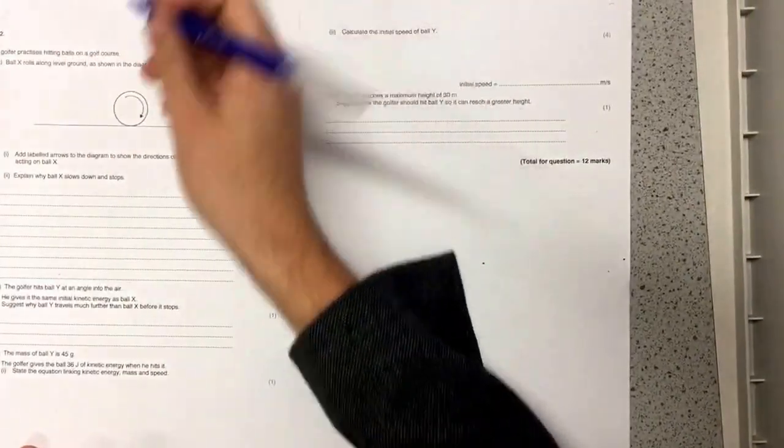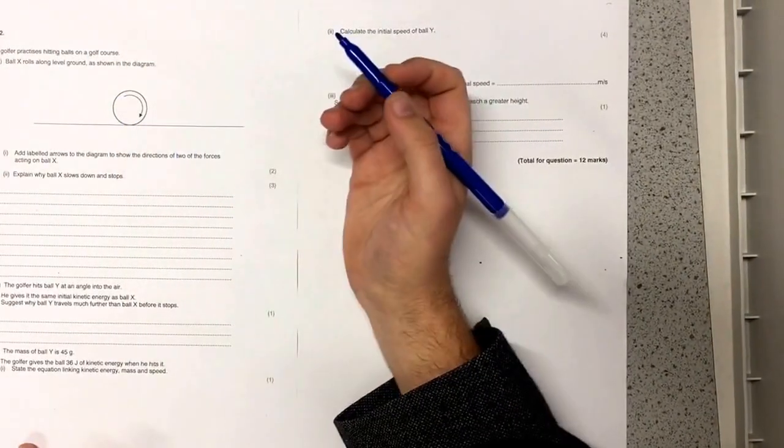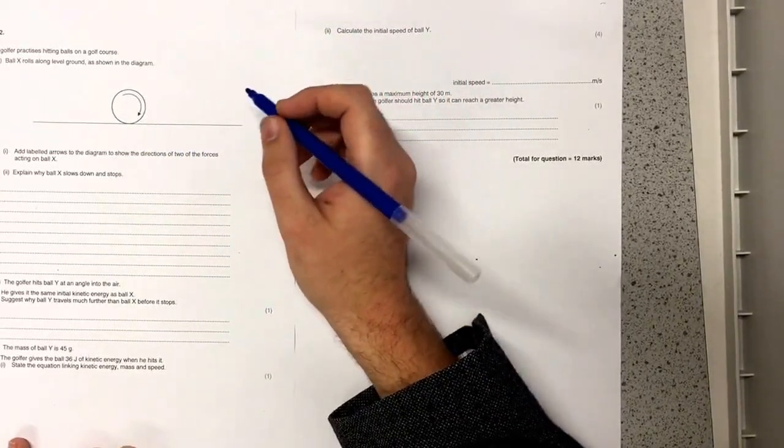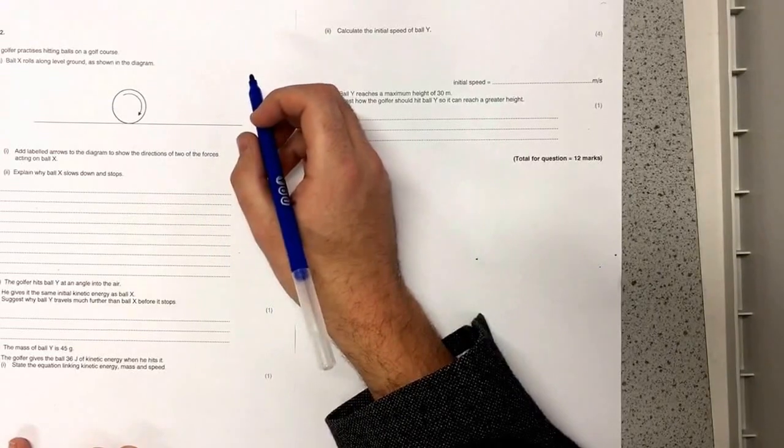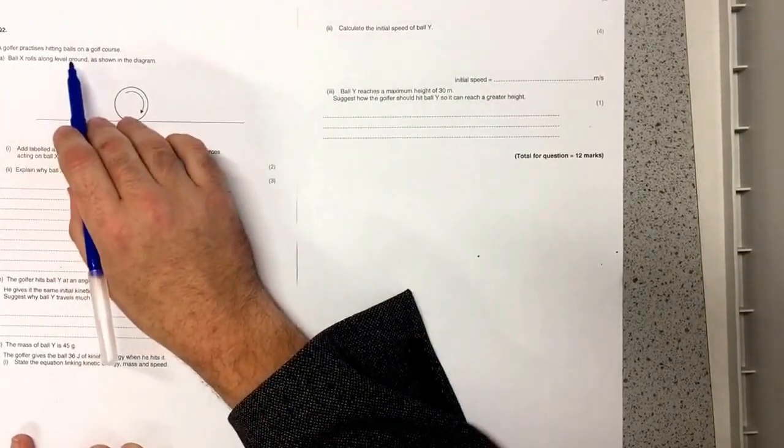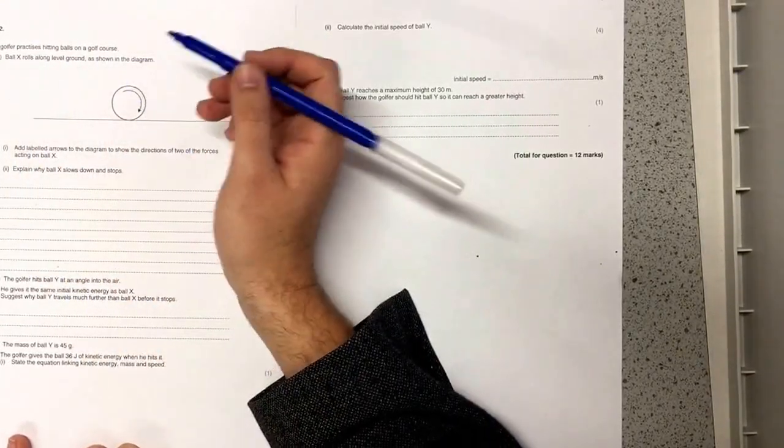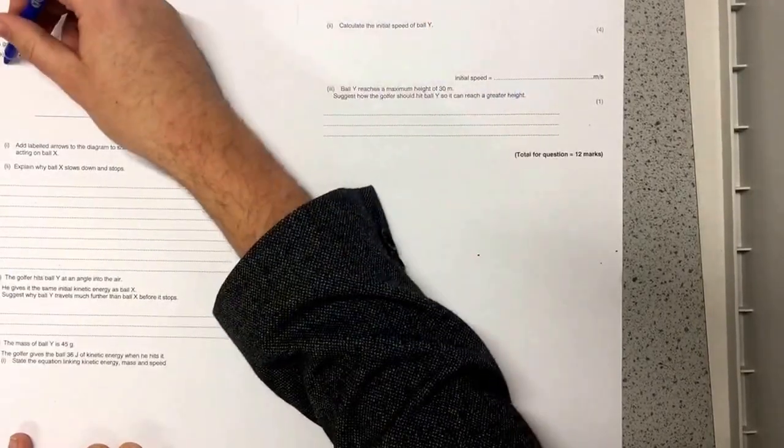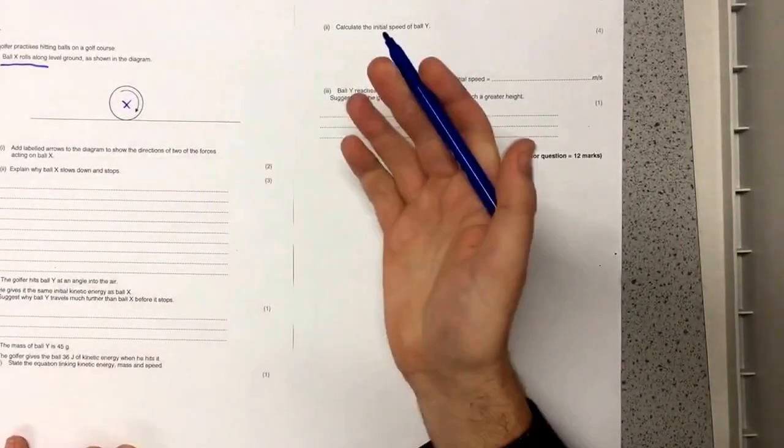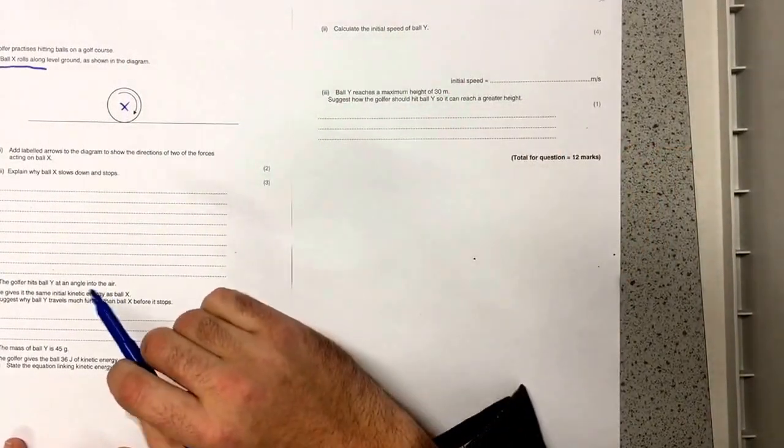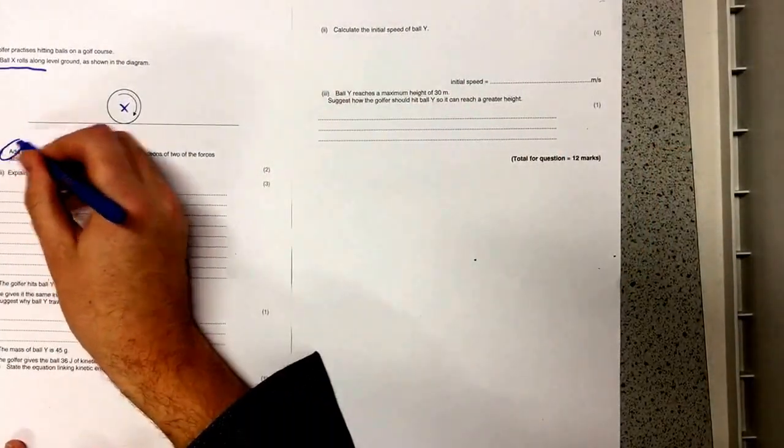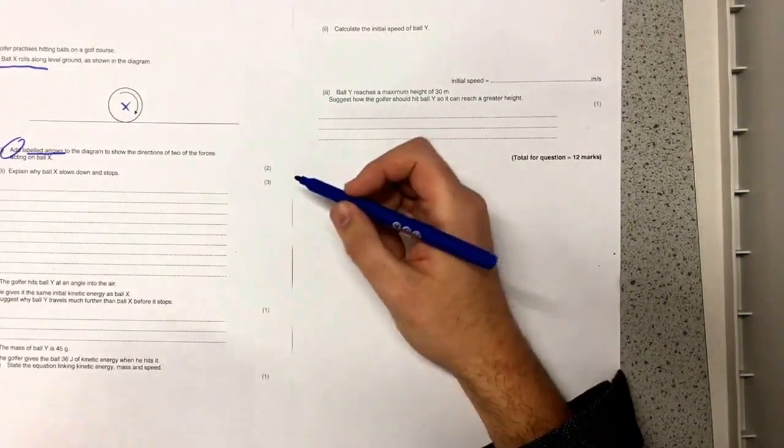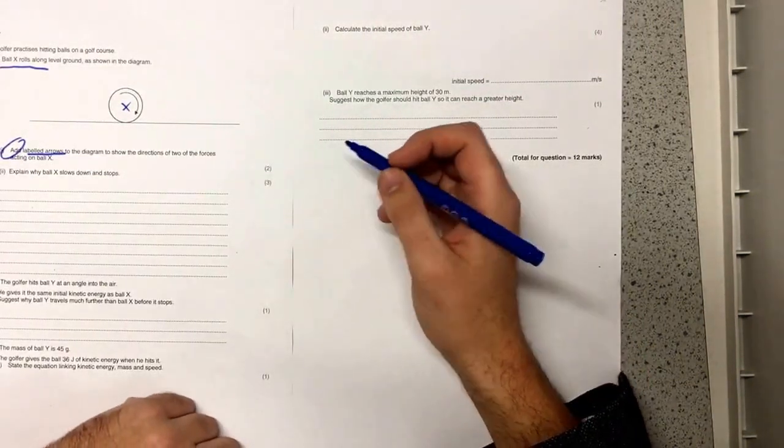So this question is about forces on a golf ball. Let's just have a read through the question, make sure we understand it before we start answering it. It says the golfer practices hitting balls on a golf course. Ball X, so this is X right here, rolls along the level ground as shown in the diagram. Then it says to add labelled arrows to the diagram to show the direction of the two forces acting on ball X.